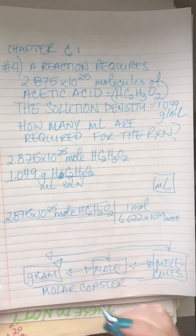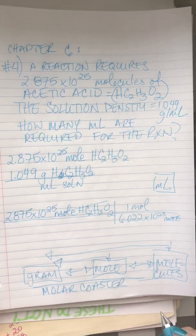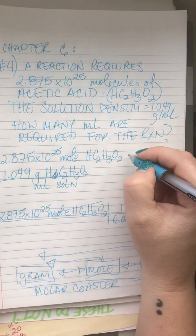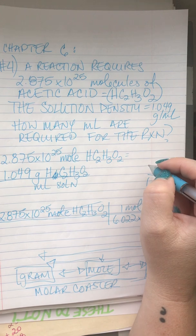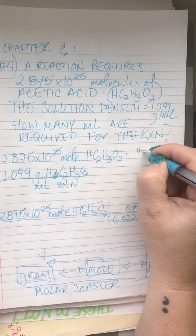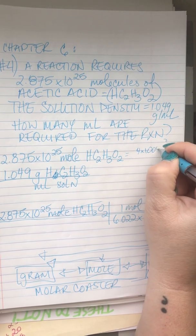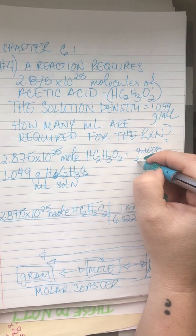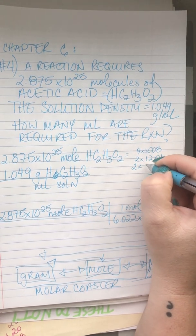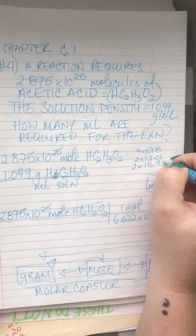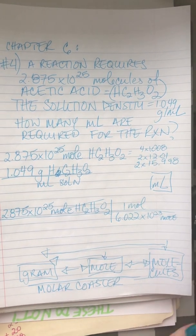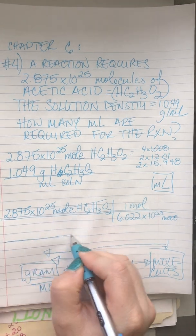Now what piece of information do I need to go from moles to grams? The molar mass. So we have our chemical formula for acetic acid. The molar mass is going to be four times the molar mass of hydrogen, two times carbon, and two times oxygen.